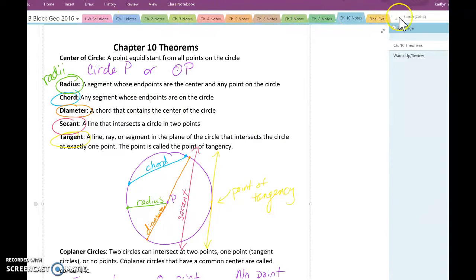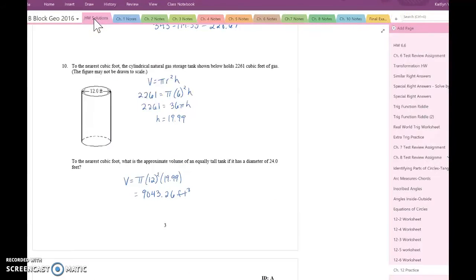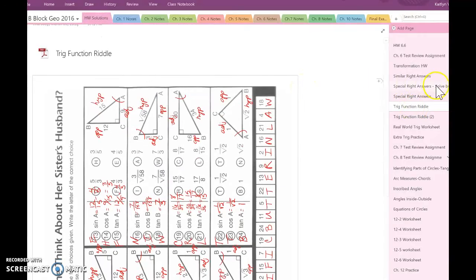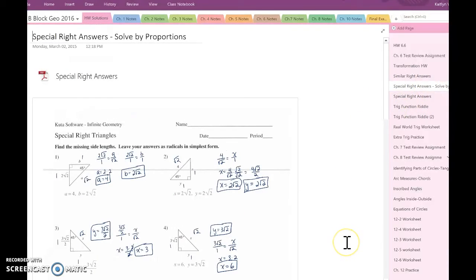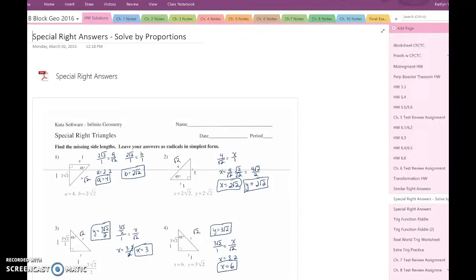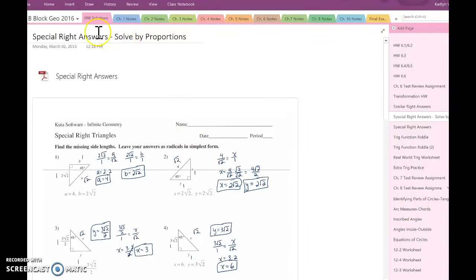So it was organized by chapters. I had a final exam review section. The thing that students probably most accessed on their own were these homework solutions. I had organized all my homework solutions together in one section, which was based on student feedback.